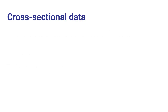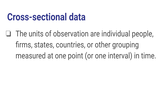With cross-sectional data, the units of observation are individual people, firms, states, counties, countries, or some other group that's measured at a given point in time or a given interval of time.